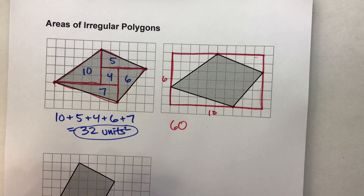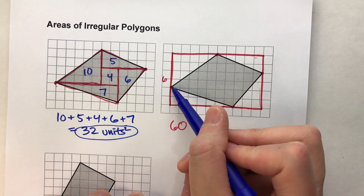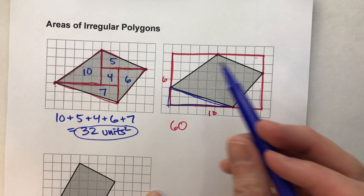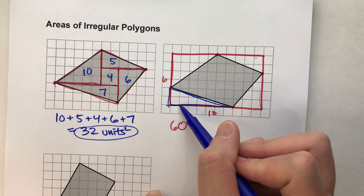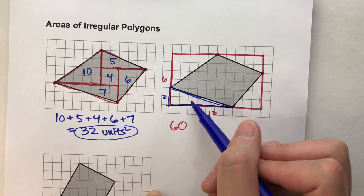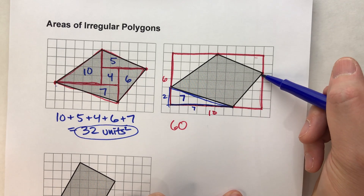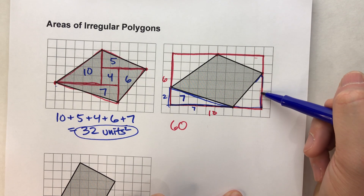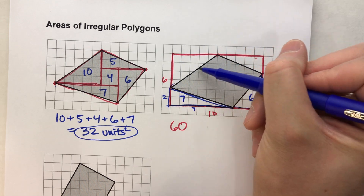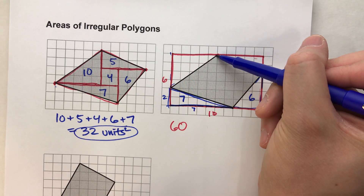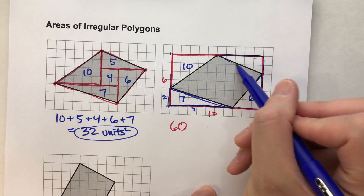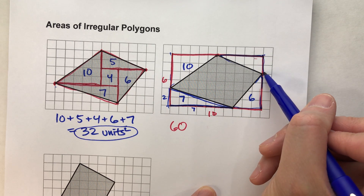Now let's subtract off the pieces I don't want. I don't want this piece right here — that's a triangle. Base times height divided by 2: 7 times 2 divided by 2 is 7. This triangle here: 3 times 4 divided by 2 is 6. This triangle right here: 4 times 5 divided by 2 is 10. And then this triangle: 5 times 2 divided by 2 is 5.